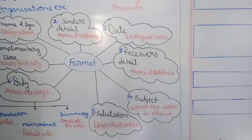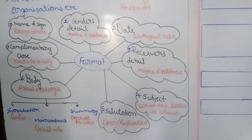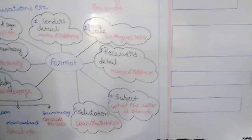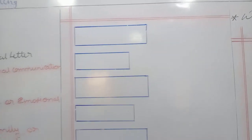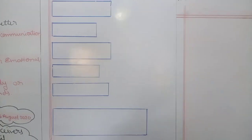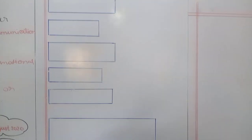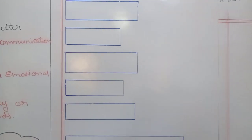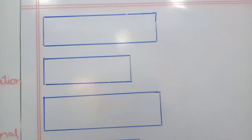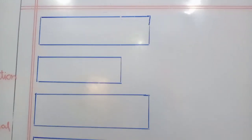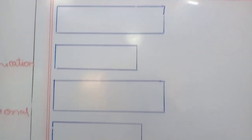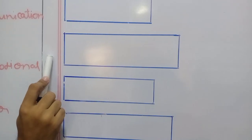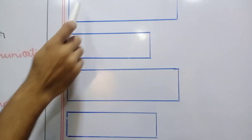Now let's see how you are going to write that letter on the page. You can see here we have a part of the board like a page. Always we have to start our letter at the left-hand side on the page, next to the margin. Here we have the red margin line, and always we have to start next to the margin.